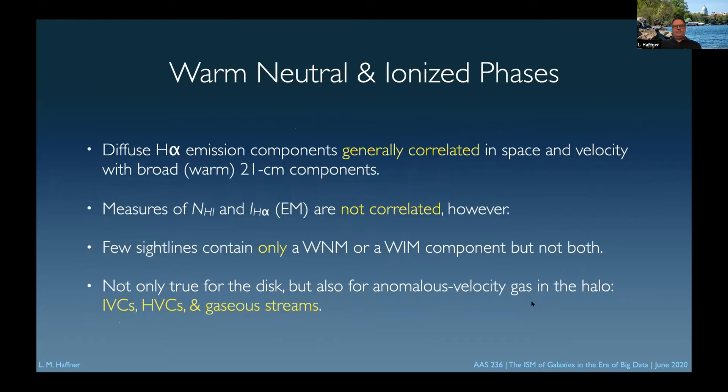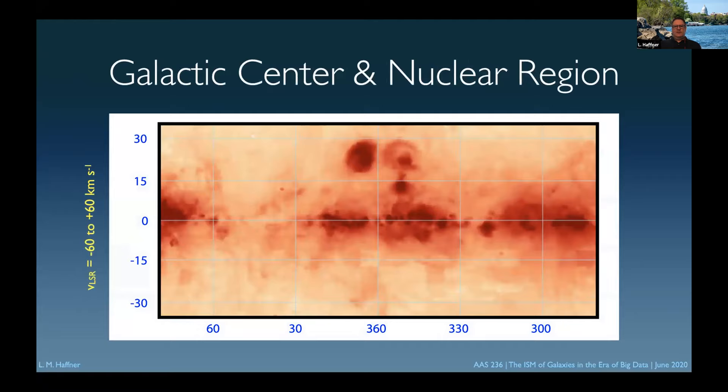I'm going to focus on new places where we've been able to see warm ionized gas and really trace it well. We generally see this correlation in velocity space and also spatially, but the column density of H1 and the emission measure or intensity of H-alpha do not appear to be correlated. This is true not only in the disk — for example in the spiral arms — but also in the halo for intermediate high velocity clouds and gaseous streams.